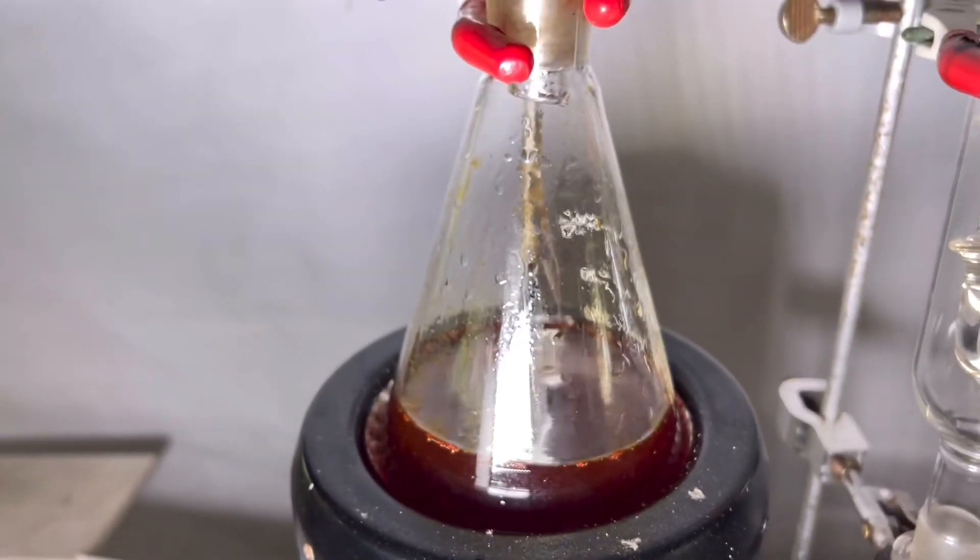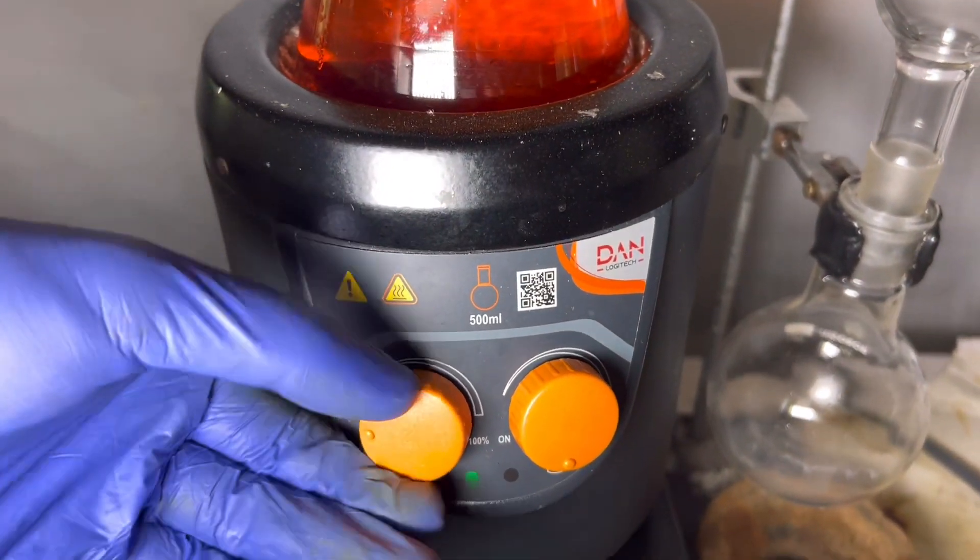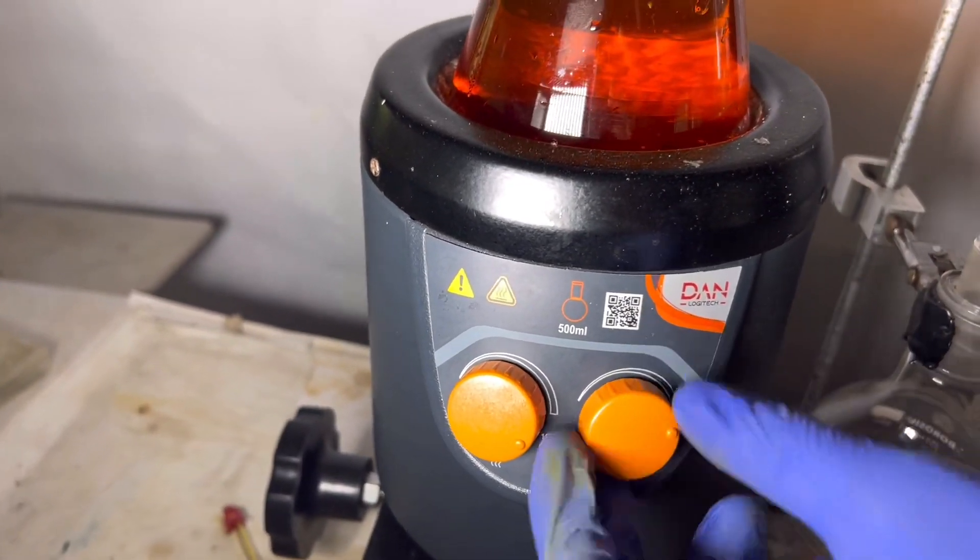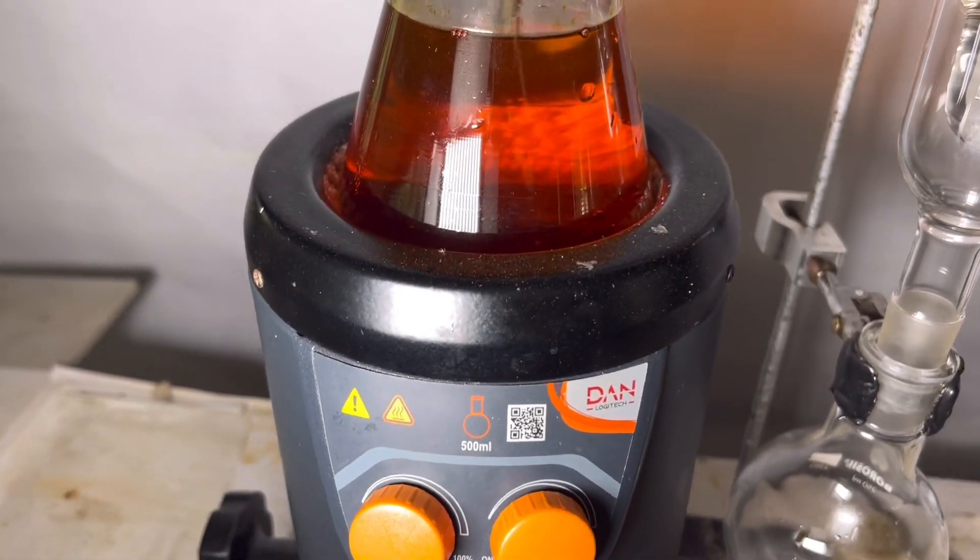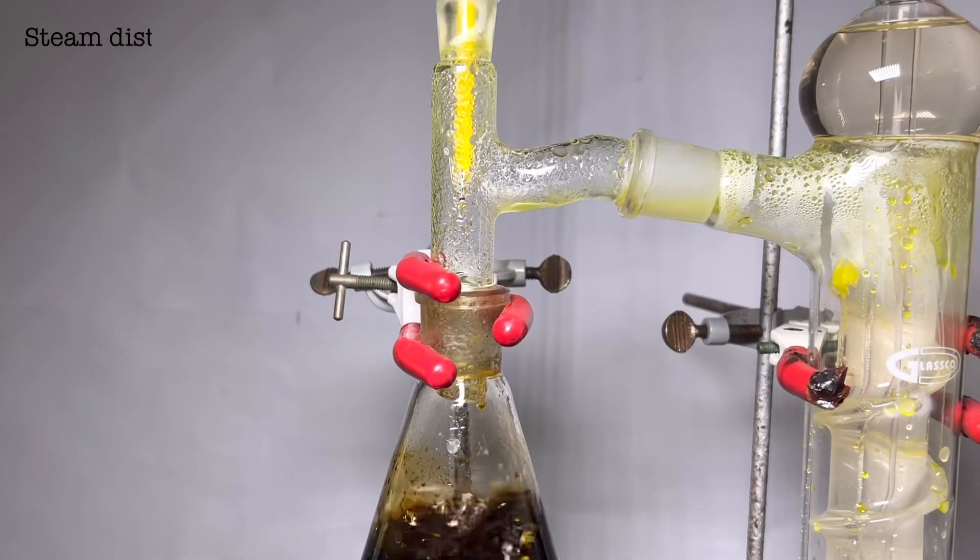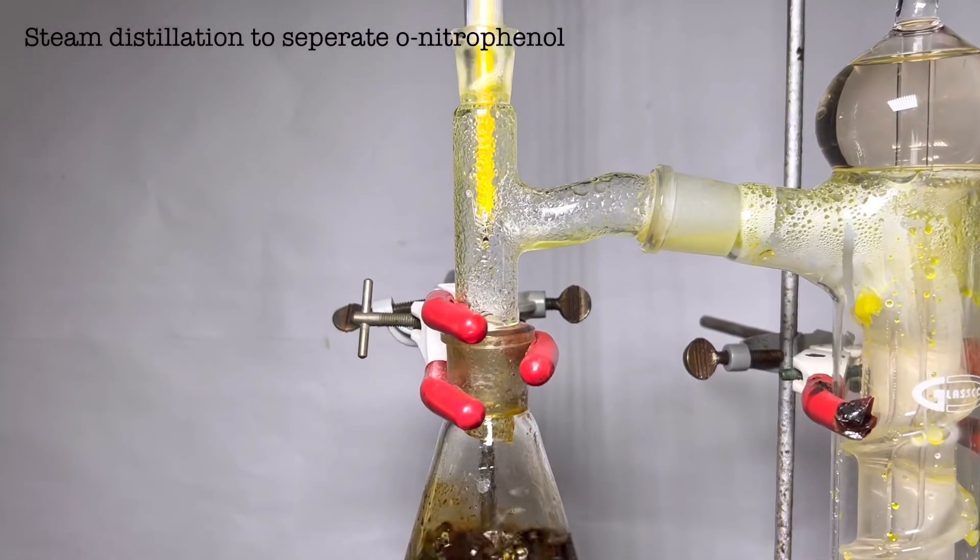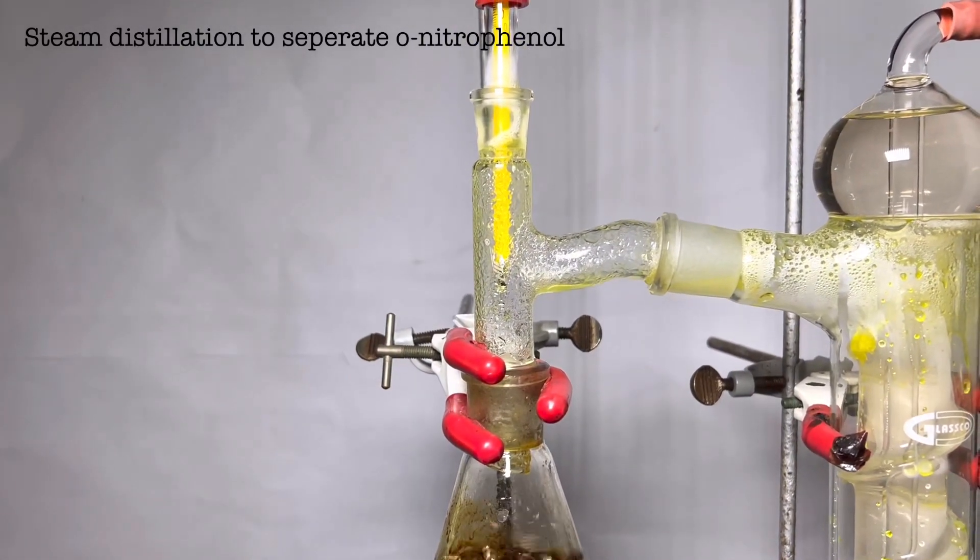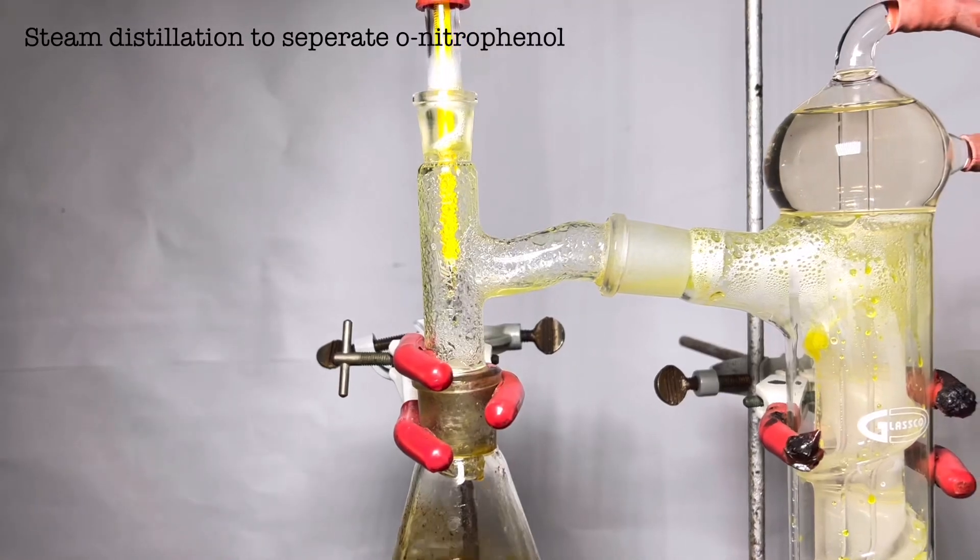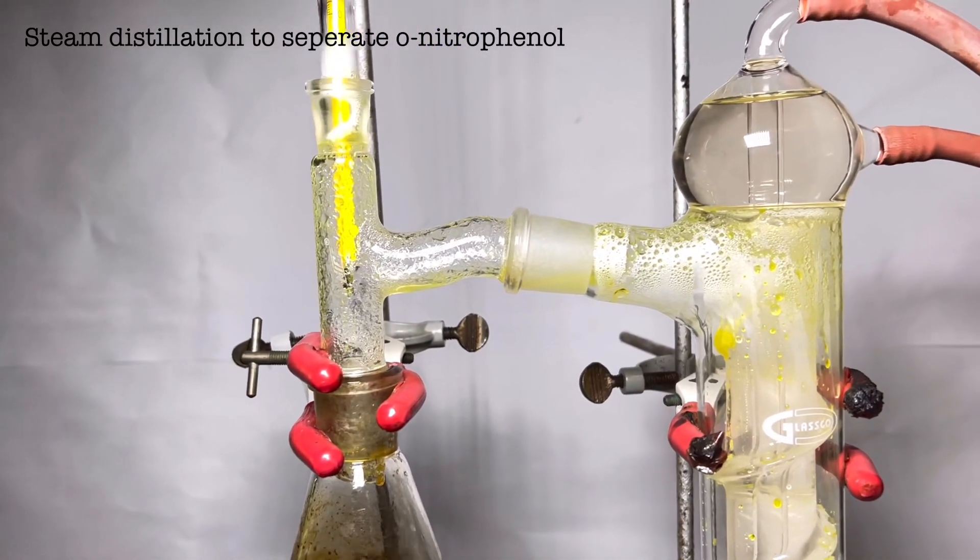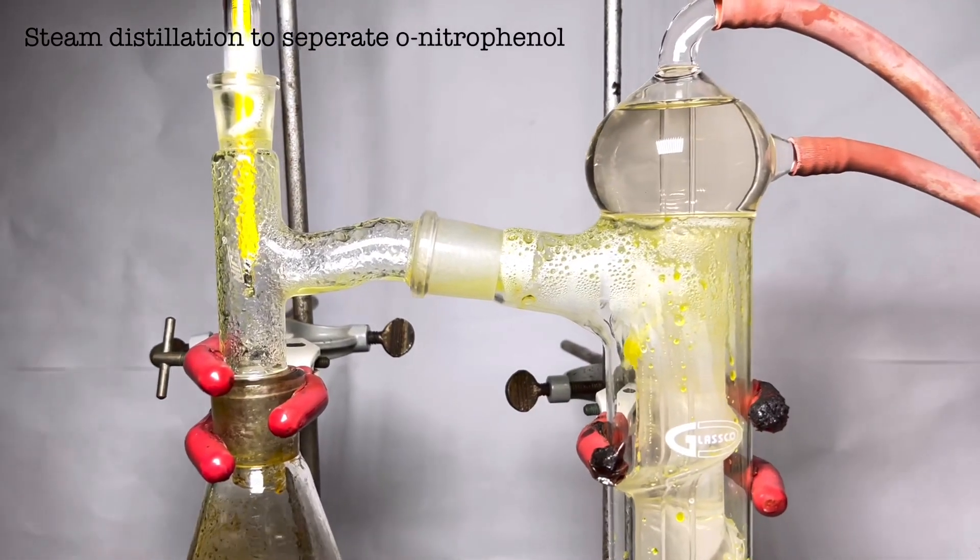We will be performing a steam distillation. Separation of ortho and para-nitrophenols by steam distillation is possible because the ortho compound contains an intramolecular hydrogen bond between the oxygen of the nitro group and the hydroxyl group in the ring. The para isomer is associated with intermolecular hydrogen bonding. So ortho-nitrophenol will distill over with water and the para-nitrophenol would remain in the distilling flask.